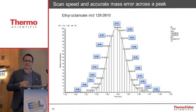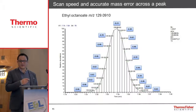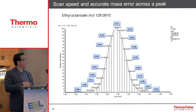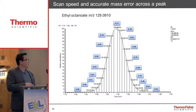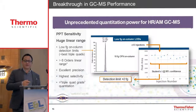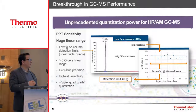This is a GC peak of an extractable from one of our O-rings, and we've shown every single spectrum across that GC peak, acquired at 60,000 resolution. We can see we have plenty of scans across the peak, and every single scan is less than 1 ppm mass accuracy. Other high-resolution technologies would need to take an average across the peak to come up with a mass accuracy result, which introduces errors, whereas we can take any individual scan and have confidence in that mass accuracy result.